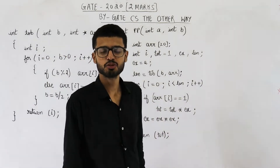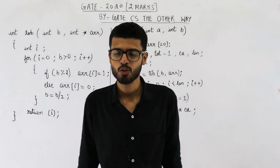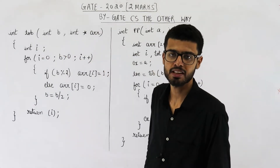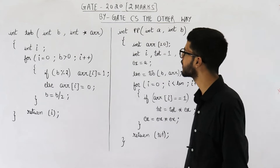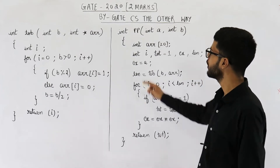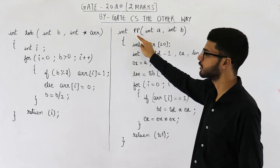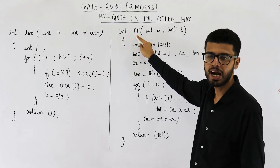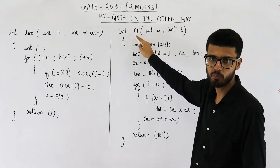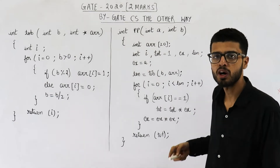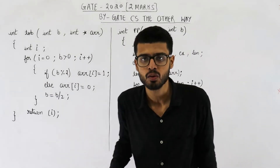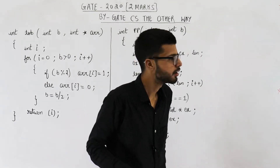Hello people, welcome back. This question is from a 2020 exam and it is worth two marks. They are asking: if you call function pp and pass 3 and 4 as parameters, what is the value that will be returned?